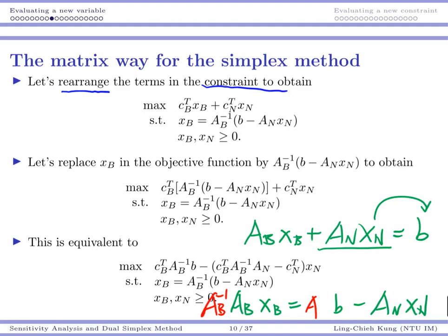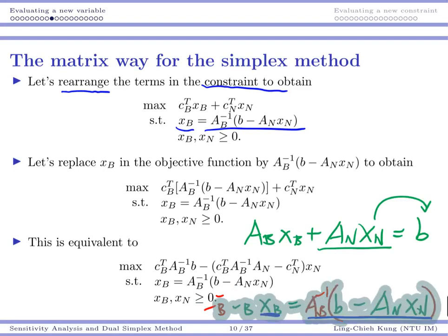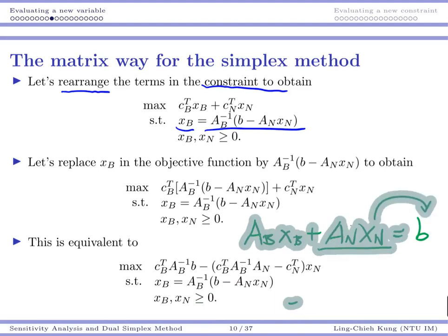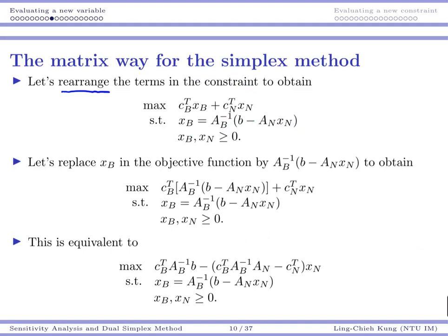Next, I multiply both sides by AB-inverse. On the left-hand side AB-inverse and AB cancel each other, giving xB = AB-inverse * b - AB-inverse * AN * xN. This derivation is nothing but rearrangement, subtraction, and taking an inverse — not a big deal. My next step is to take this expression for xB and substitute it into the objective function.